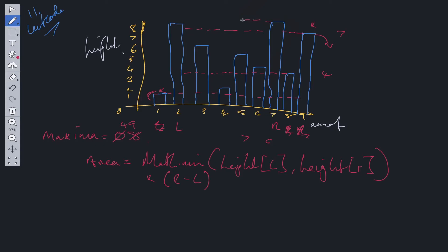So we focus on this area. The smallest height is 8, and the width is 7 minus 2 which is 5. So 8 times 5 is 40. Is 40 greater than 49? No it is not. So then we move inwards.